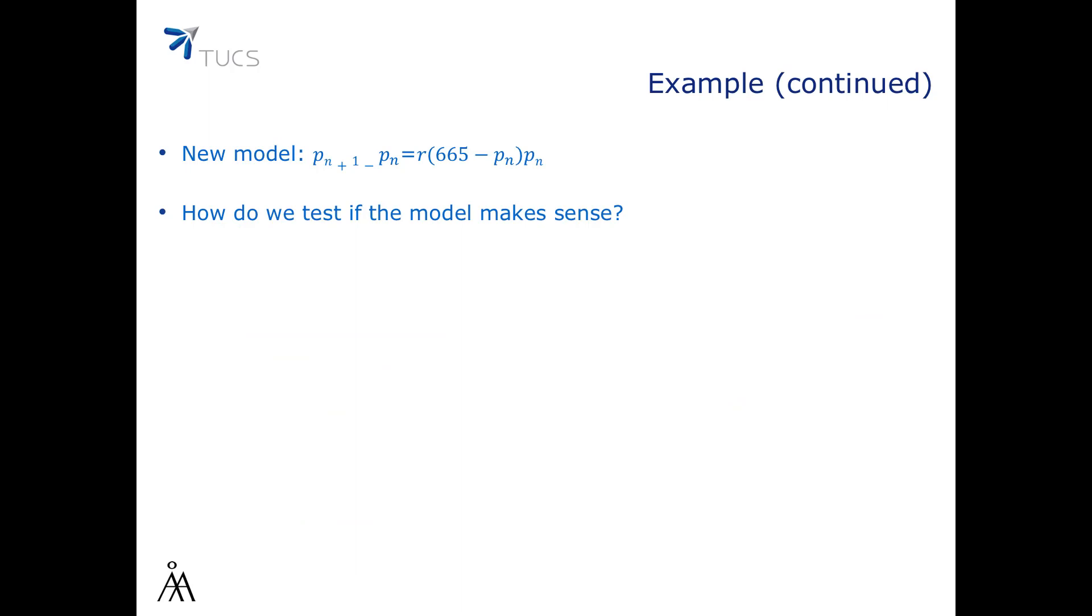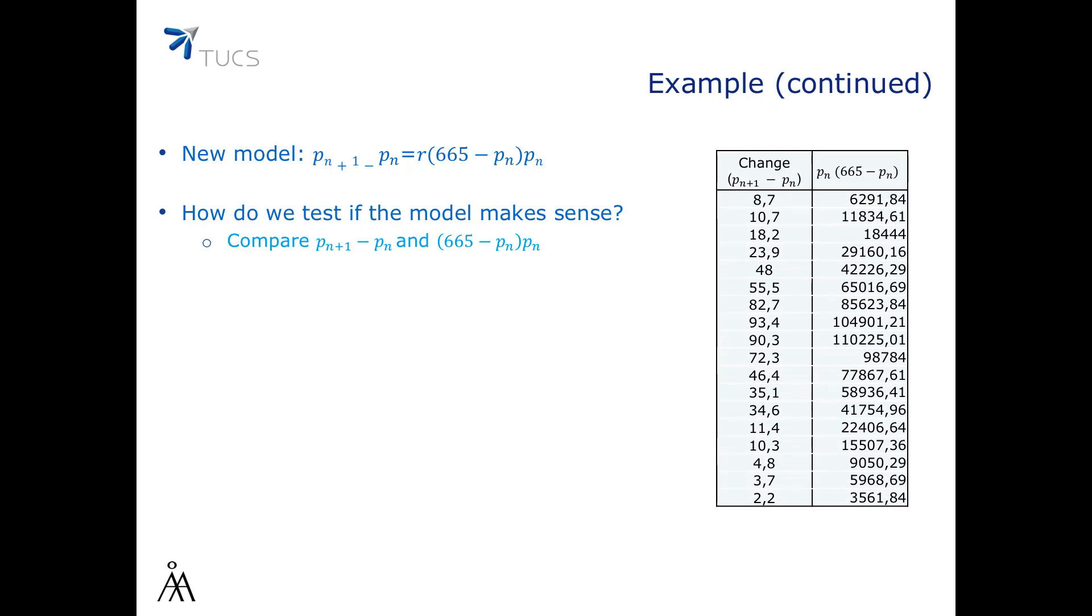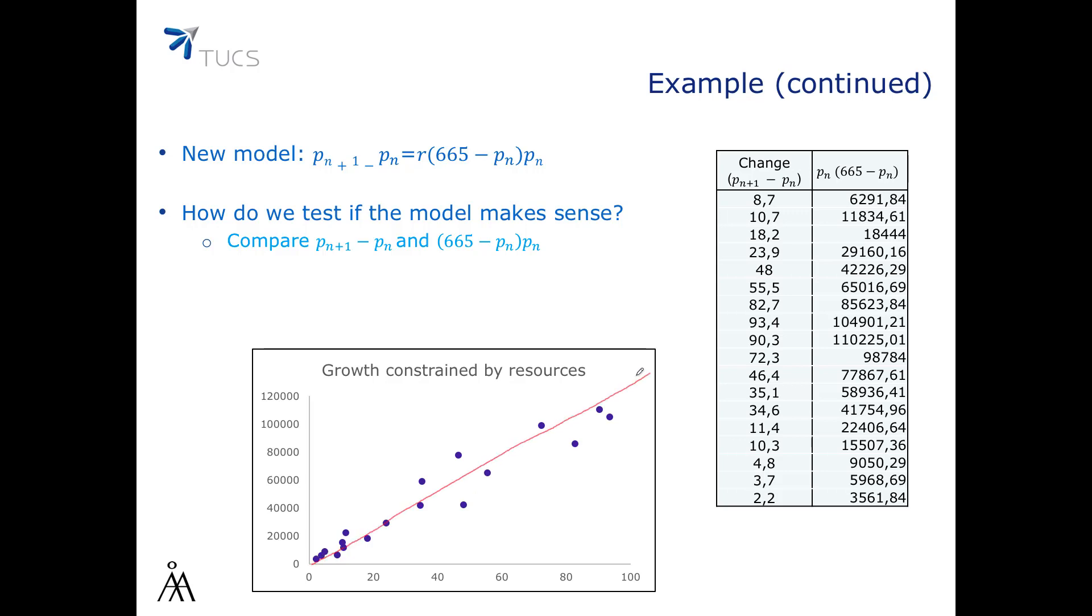To test if our new model makes sense with respect to experimental data, we can compare P(n+1) minus P(n) and (665 minus P(n)) times P(n). If this model is correct, we should see a linear dependency between them. From the plot, we can see that there is indeed a reasonable proportionality between them. We can even estimate the slope of this line, and in this case, we get that it's about 0.00082.